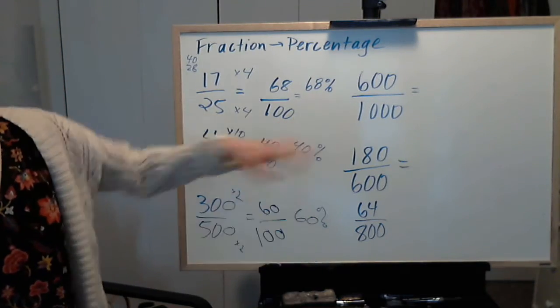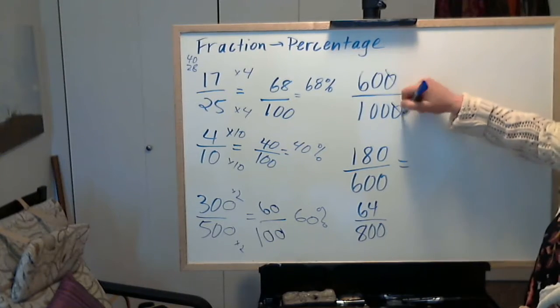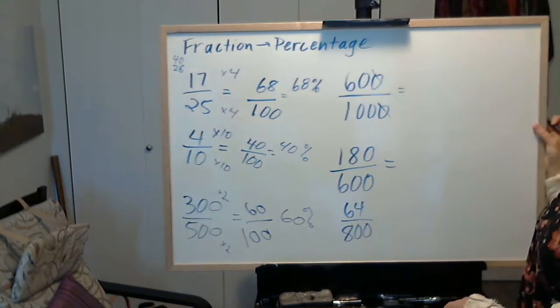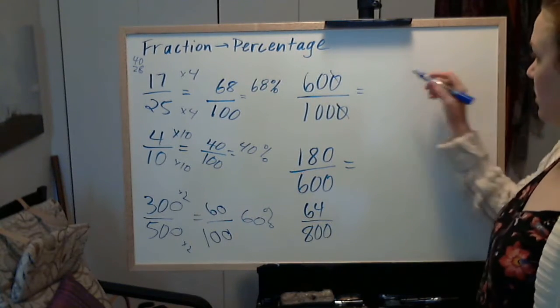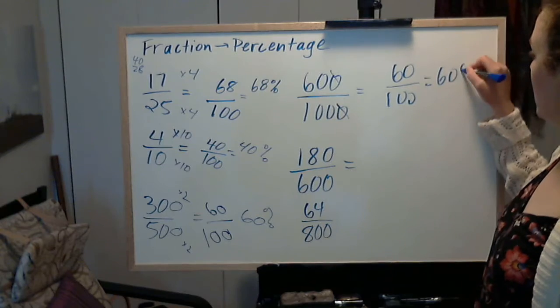You can do the same thing up here. You can divide top and bottom by 10, remove a 0, and then you just have 60 out of 100. 60 out of 100 equals 60%.